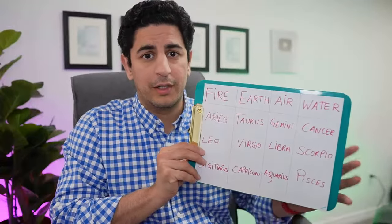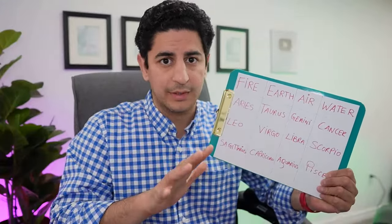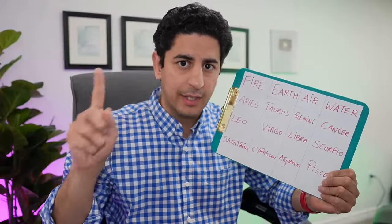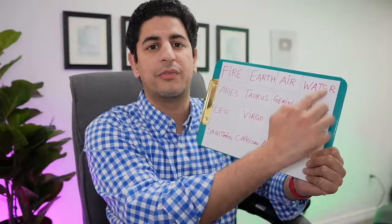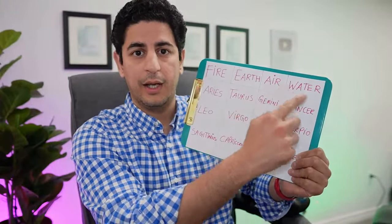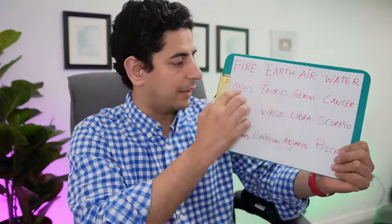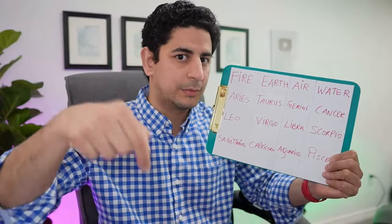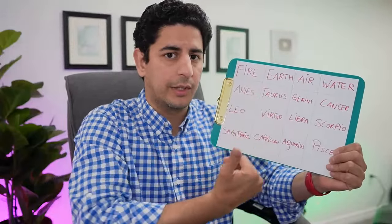We have four elements used in astrology. When it comes to nature, we have five elements: fire, earth, air, water, and sky. These five elements make up the entire existence. Out of those five, Vedic astrology considers four: fire, earth, air, and water. Within these four elements we have the 12 zodiac signs. I've drawn a table, and if you see my video description, I've made notes for each zodiac sign for you to read after watching this video.